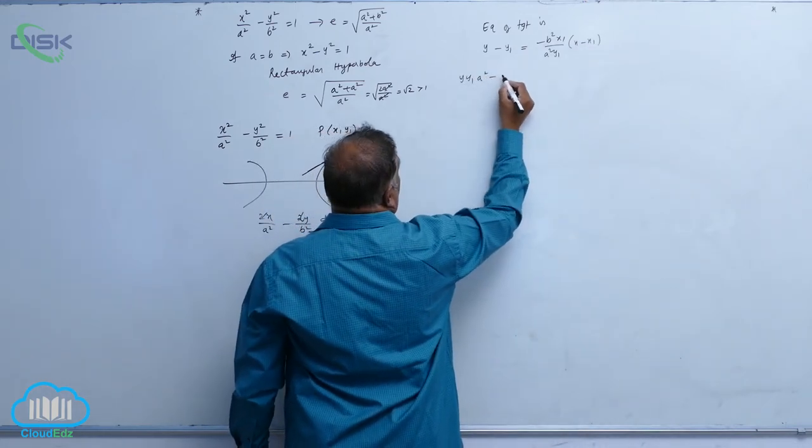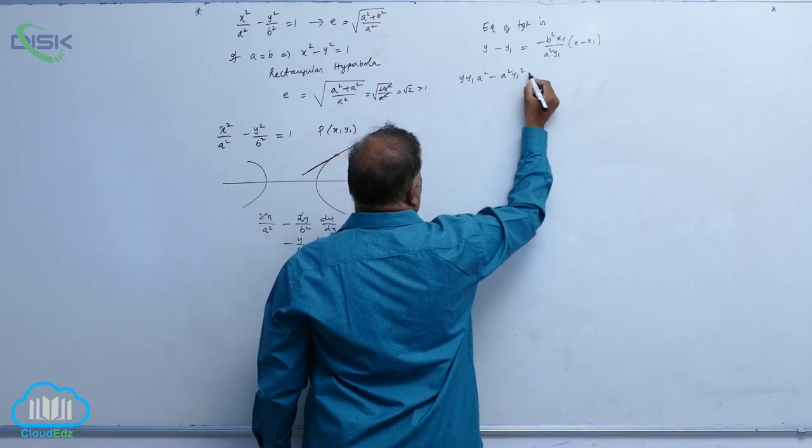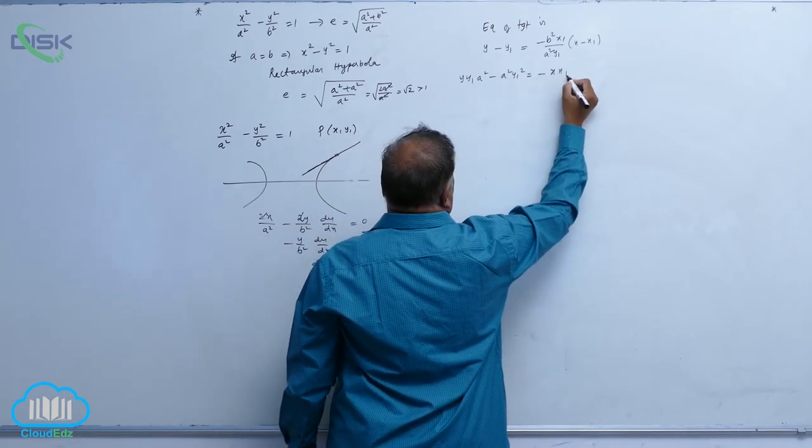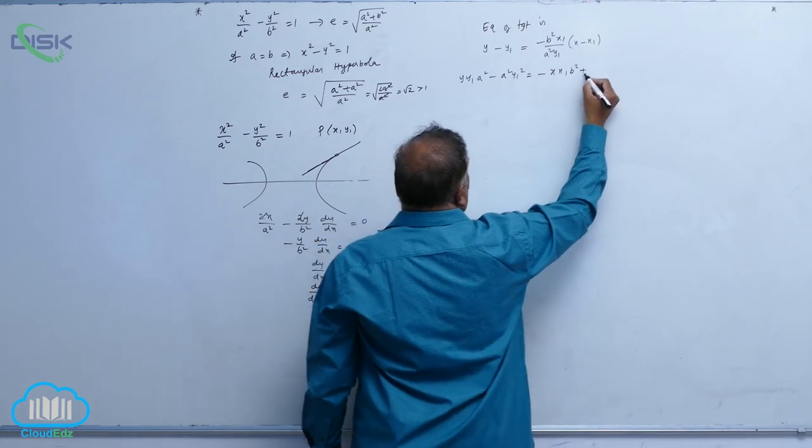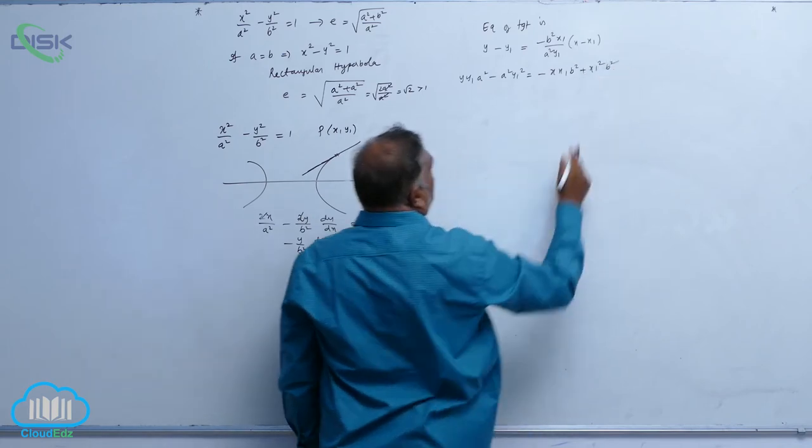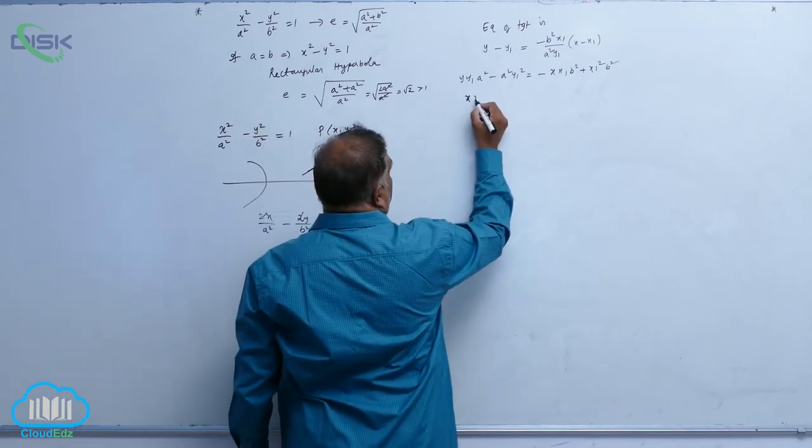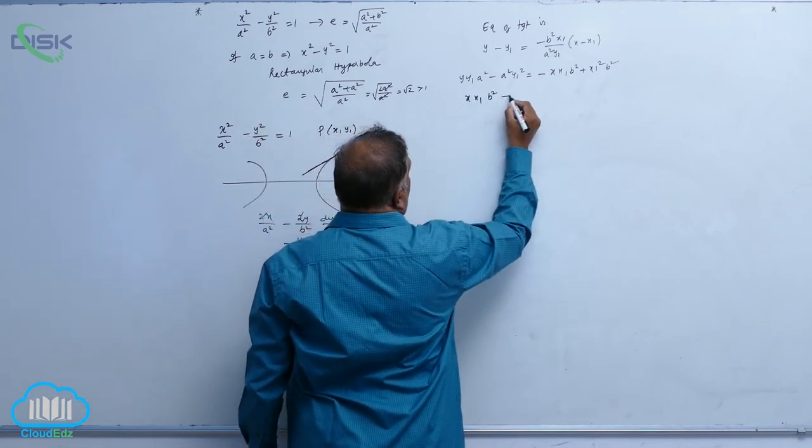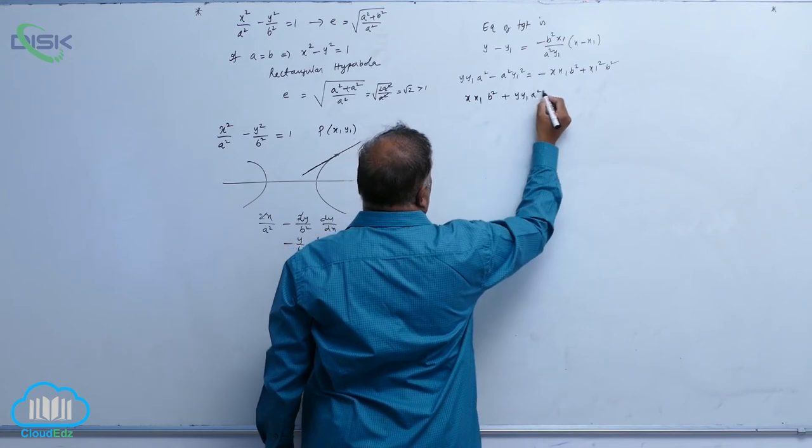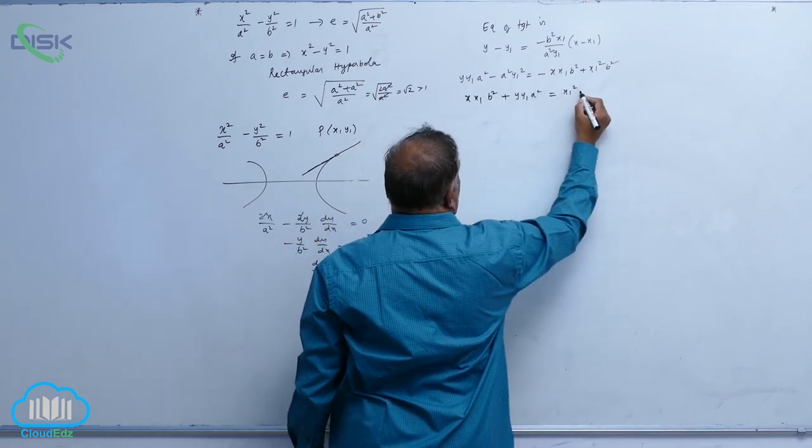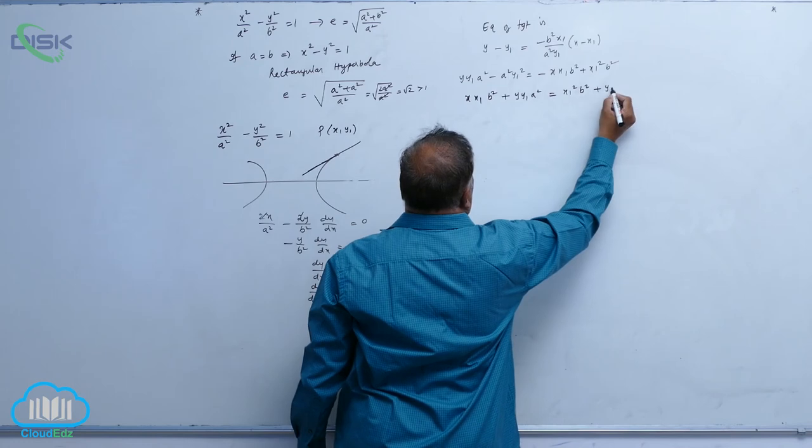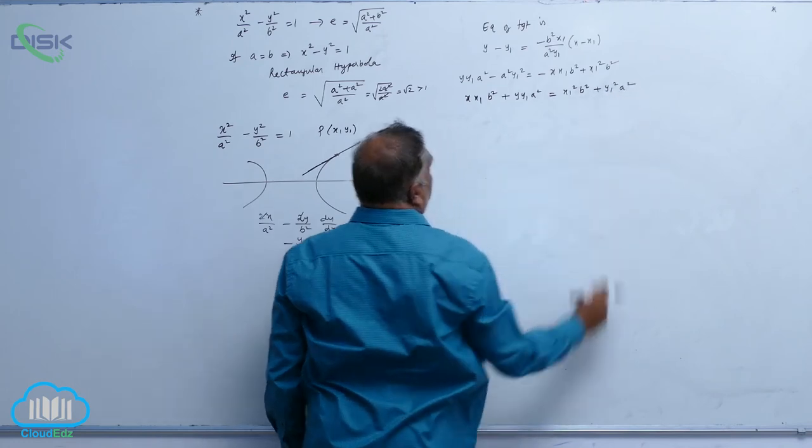yy1 a square minus a square y1 square equal to xx1 b square plus x1 square b square. Send negative terms to the opposite side. You will get xx1 by b square plus yy1 a square is equal to x1 square b square plus y1 square a square.